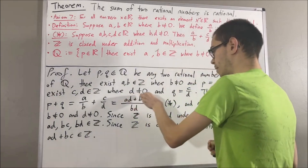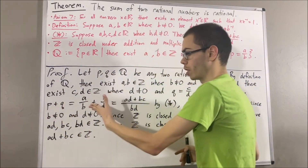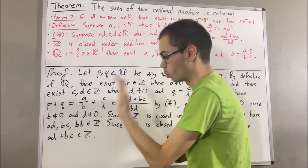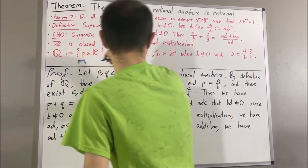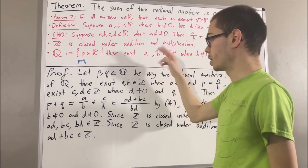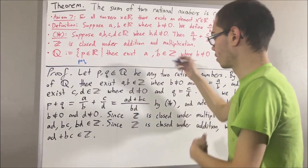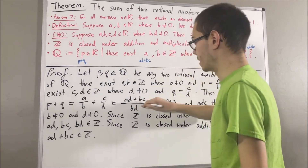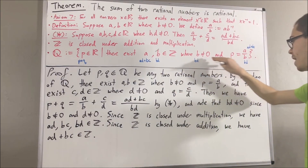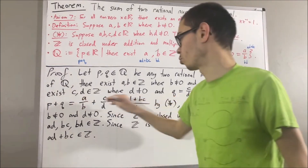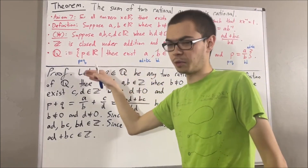We have shown that ad plus bc is an integer, bd is an integer, and bd is non-zero. So this tells us that p plus q satisfies all the requirements to be a rational number. In the definition of the rational numbers, taking p to be p plus q, we know there exist two integers with these properties — namely, let a be ad plus bc and let b be bd. We've shown these are integers, bd is non-zero, and p plus q equals ad plus bc over bd. Therefore, p plus q is a rational number by definition.